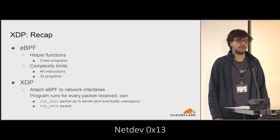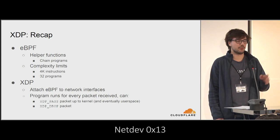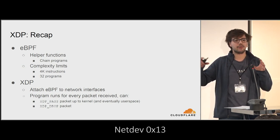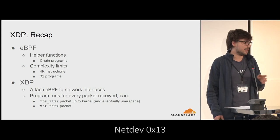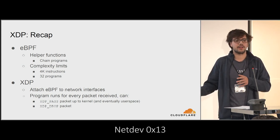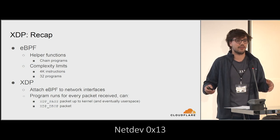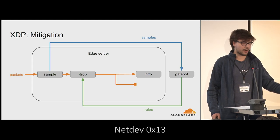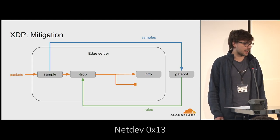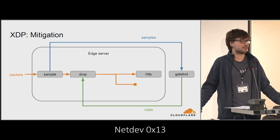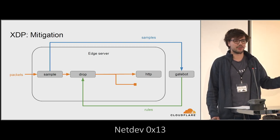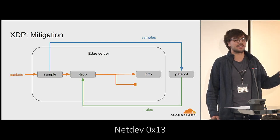XDP is really just a mechanism to attach a single eBPF program to an interface. The program and the chain of tail calls it invokes runs for every packet we receive. We can either pass it — and it reaches the normal Linux networking stack — or drop it, which is great. At first glance we want to do all the dropping in XDP. But the one thing to remember is we need to sample before we drop, so a key requirement of dropping packets in XDP is that we need to be able to sample them in XDP as well.